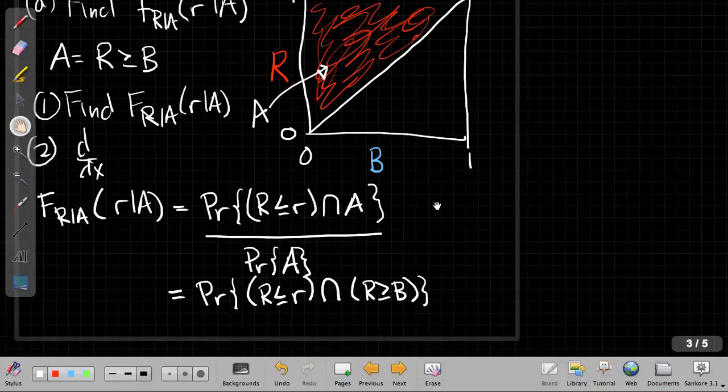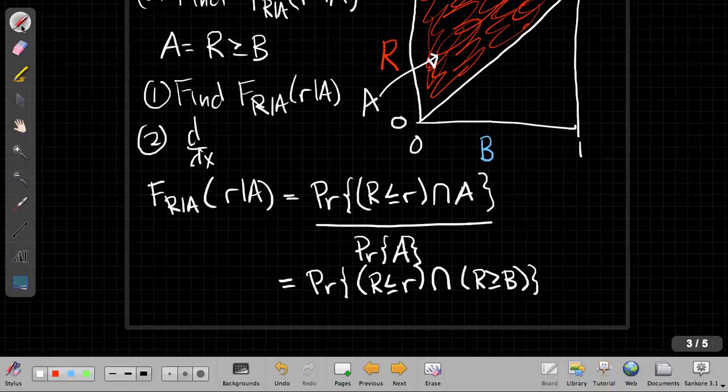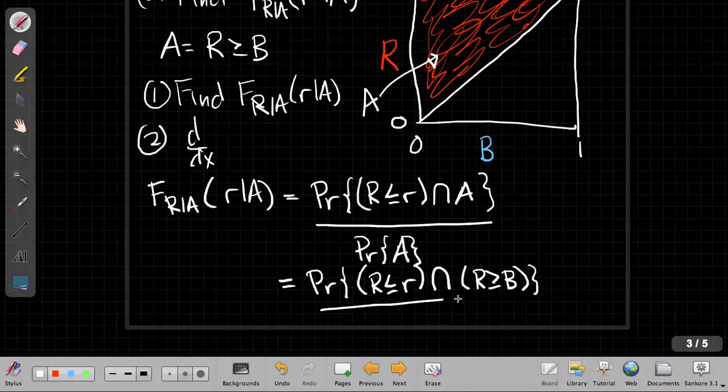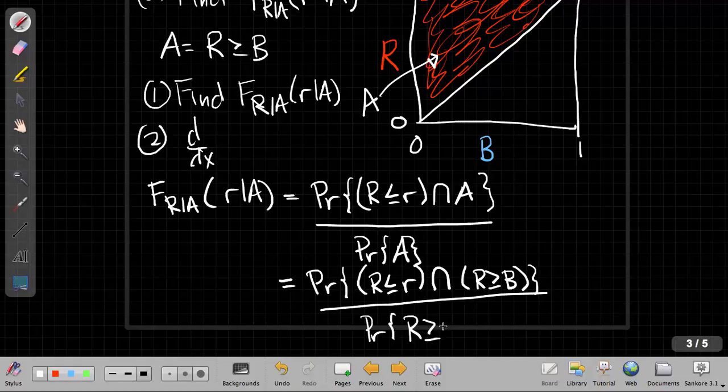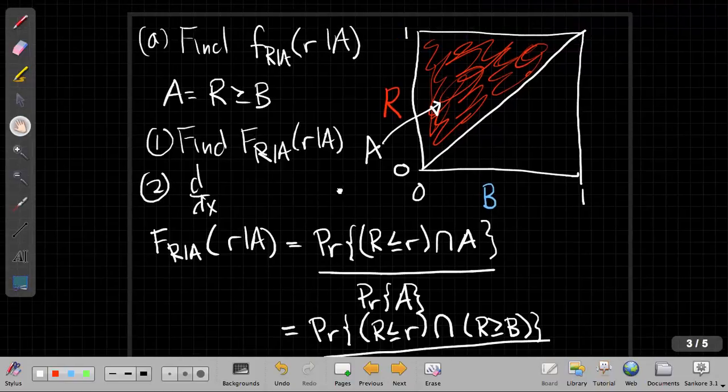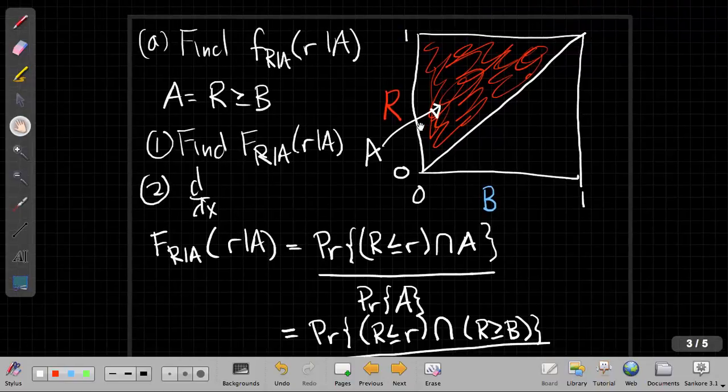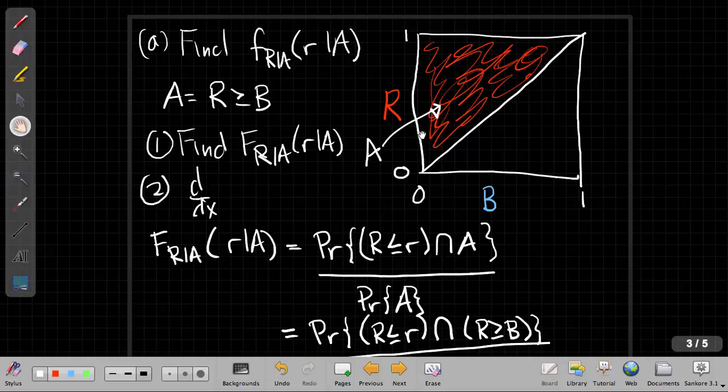Divided by the probability that R is greater than or equal to B. Well, just scrolling back here, by symmetry, it's very clear that the denominator is a half. The probability that R is greater than B is a half. So I can quickly set that in there.